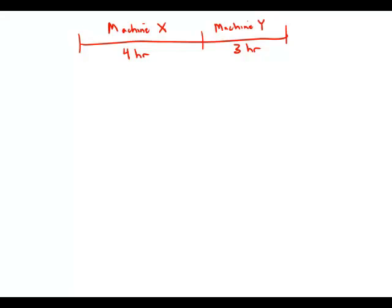Machine X and Y produce identical bottles at different constant rates. Machine X operating alone for four hours filled part of the production lot. Machine Y operating alone for three hours filled the rest of this lot. How many hours would it have taken machine X operating alone to fill the entire production lot?